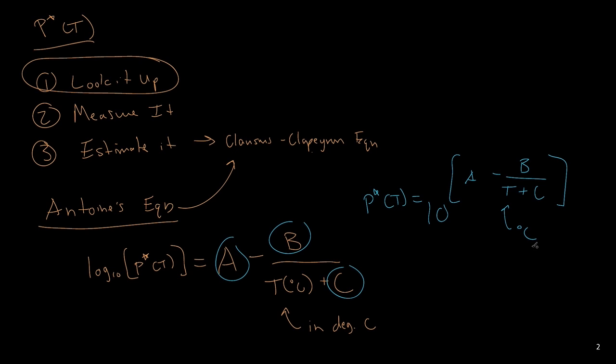And so the vapor pressure is a very useful material property to know. It's tabulated in a lot of different places, but Anton's equation is typically going to be the most common way that you'll see the data presented if it's not presented in the steam tables or in some other tabulated or graphical form.